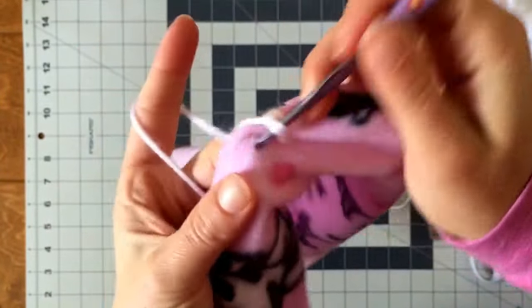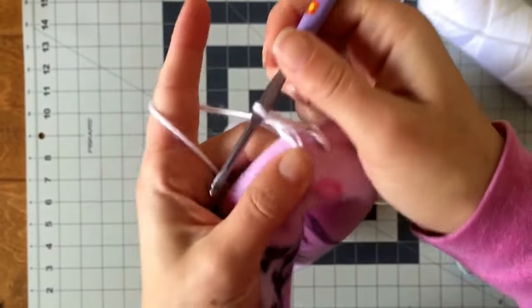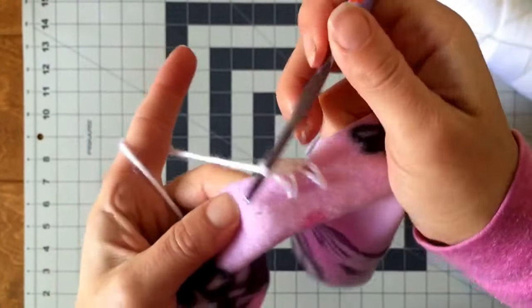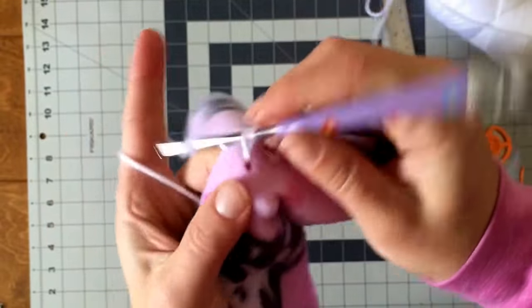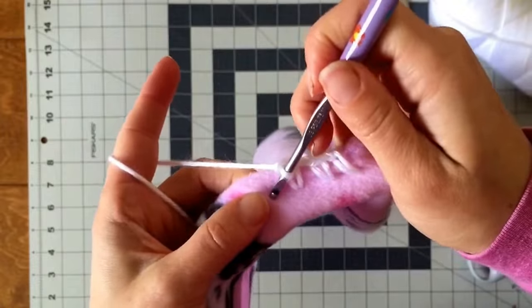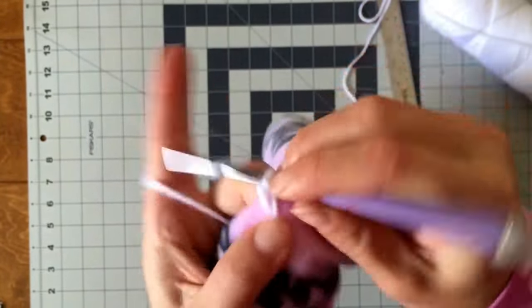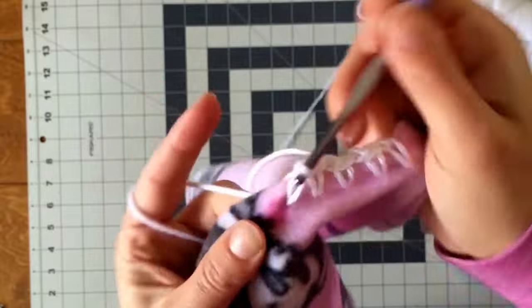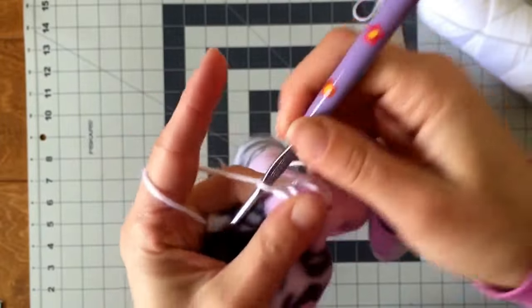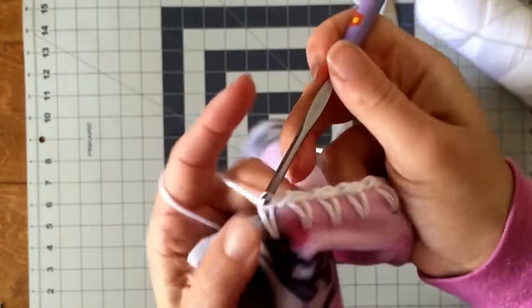Chain one. Then I'm going to go on the next hole, single crochet, chain one, next hole, single crochet, chain one. So you're just going to keep doing this throughout the whole first part of your edge here. Just single crochet, chain one. And then I'm just going to show you quick when we get to the corner.